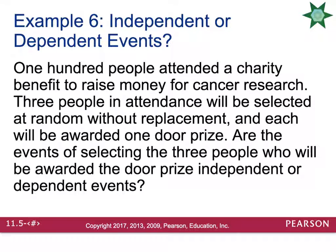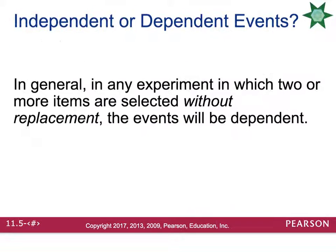For example, 100 people attend a charity benefit and three will be selected at random without replacement, each awarded one door prize. Are these events independent or dependent? This is a dependent event — each time one person is selected it changes the probability of the next selection. In the first draw it's 1 out of 100, the second is 1 out of 99, and the third is 1 out of 98. In general, any experiment in which two or more events are selected without replacement will be dependent.